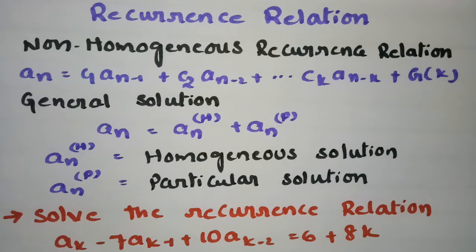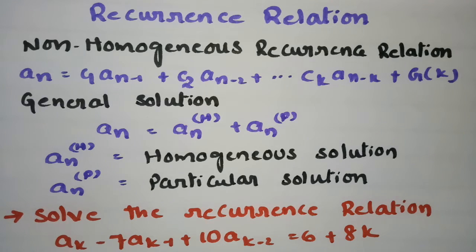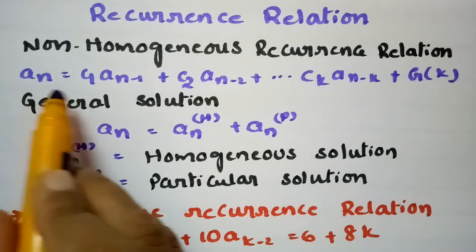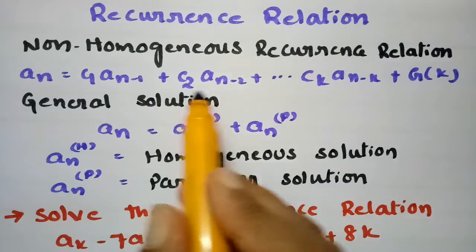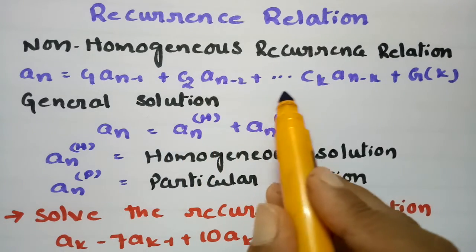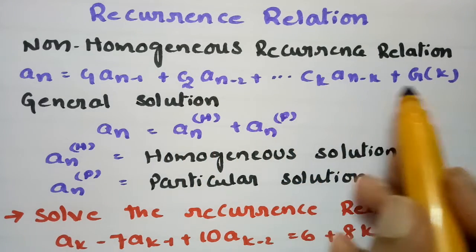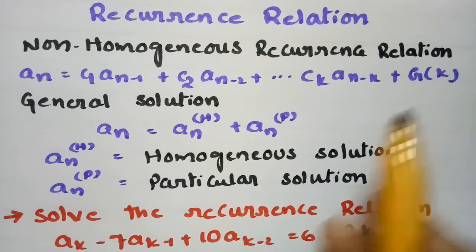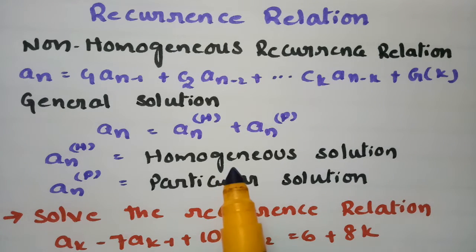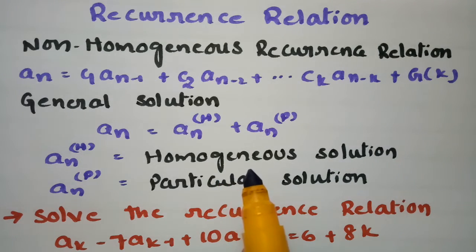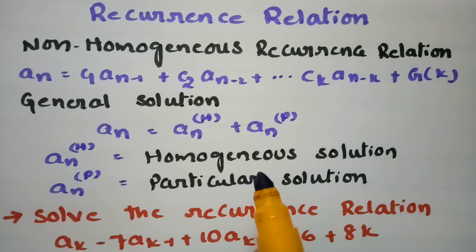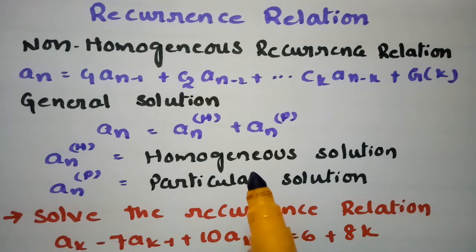In today's video I am going to explain what is a non-homogeneous recurrence relation. Any equation of the form An = C1·An-1 + C2·An-2 + ... + Ck·An-k + g(k) — if g(k) exists on the RHS, we say it is a non-homogeneous recurrence relation. If RHS is equal to 0, then we say it is a homogeneous recurrence relation.